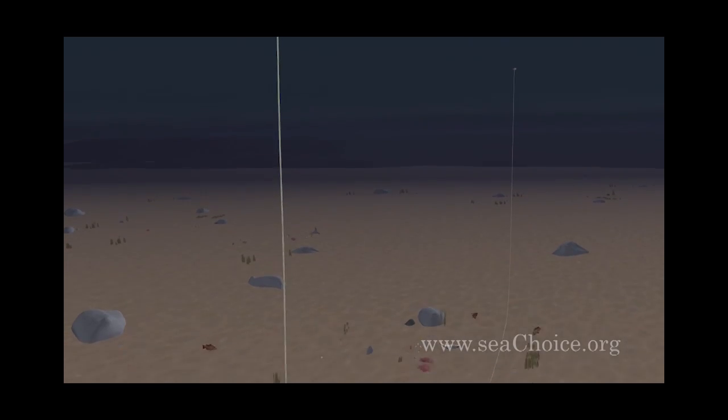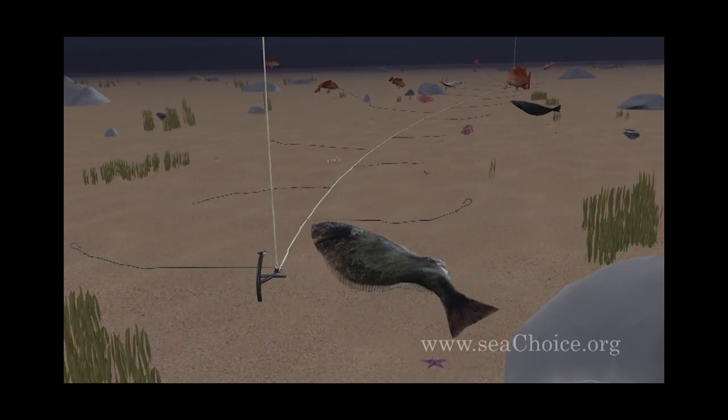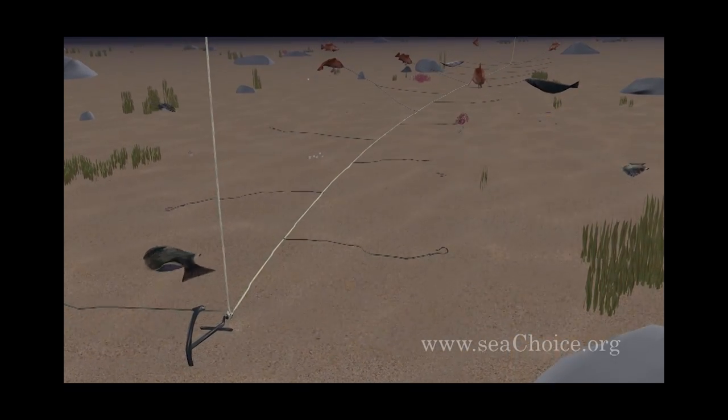Bottom longlines are used to catch large, bottom-dwelling fish. There are concerns about their habitat impact when they are set in coral forests or sponge reefs.